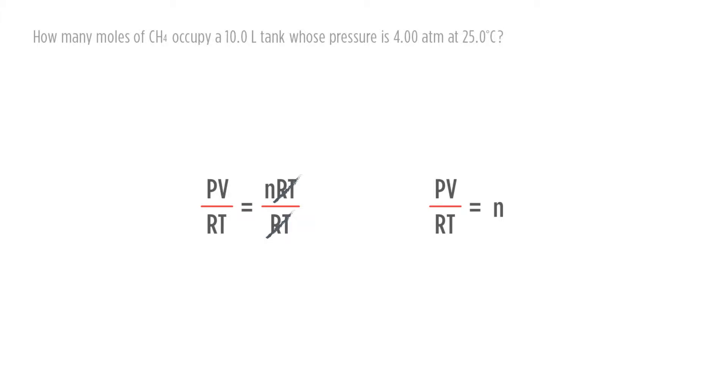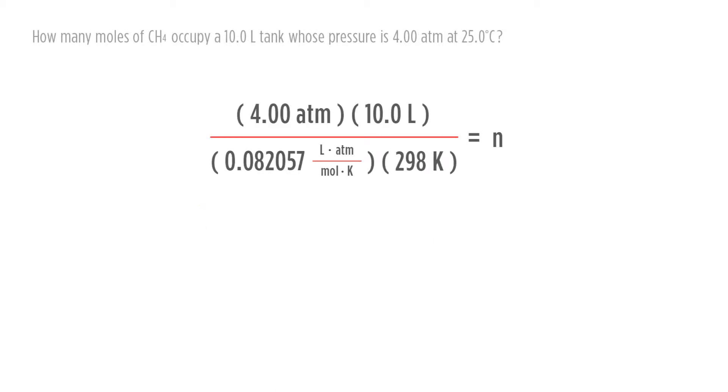Now that we have our formula situated, we can put in our values. So here we have 4.0 atmospheres times 10.0 liters over our constant, 0.082057 liters atmospheres per mole Kelvin multiplied by 298 Kelvin equals the number of moles. Again, check your units. See that atmosphere will cancel, liters cancel, and Kelvin cancel.